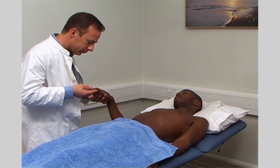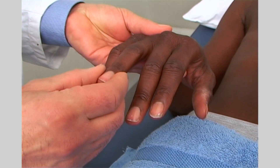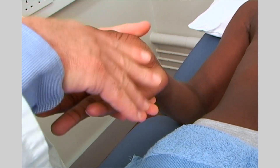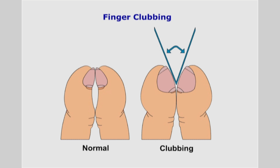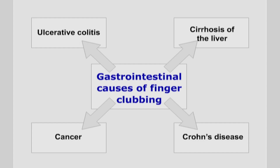Begin the formal examination with close inspection of the hands. Examine the nails and nail beds for evidence of clubbing. Finger clubbing is a reduction or loss of the angle between the nail and the nail bed. The manifestations and various causes of clubbing were discussed in the general examination video. Gastrointestinal conditions associated with clubbing include ulcerative colitis, cirrhosis of the liver, Crohn's disease, and cancer.